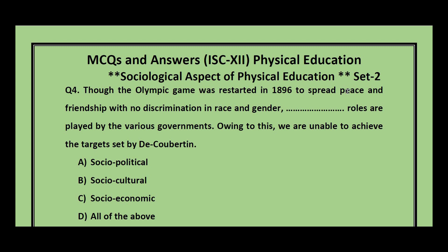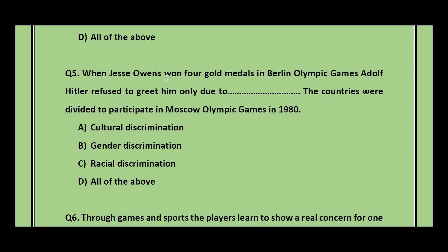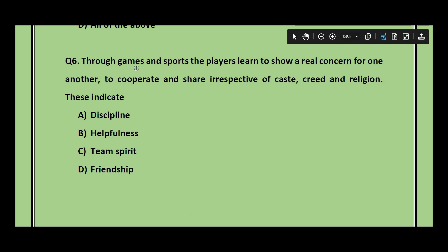Question number 4: Though the Olympic Games were restarted in 1896 to spread peace and friendship with no discrimination in race and gender, various governments have interfered, making it unable to achieve the targets set by Coubertin. The options are social, political, socio-political, socio-cultural, socio-economic, or all of the above. The answer is socio-political. Question number 5: When Jesse Owens won four gold medals in the Berlin Olympic Games, Adolf Hitler refused to greet him. Countries were divided to participate in the Moscow Olympic Games in 1980. The answer is racial discrimination.